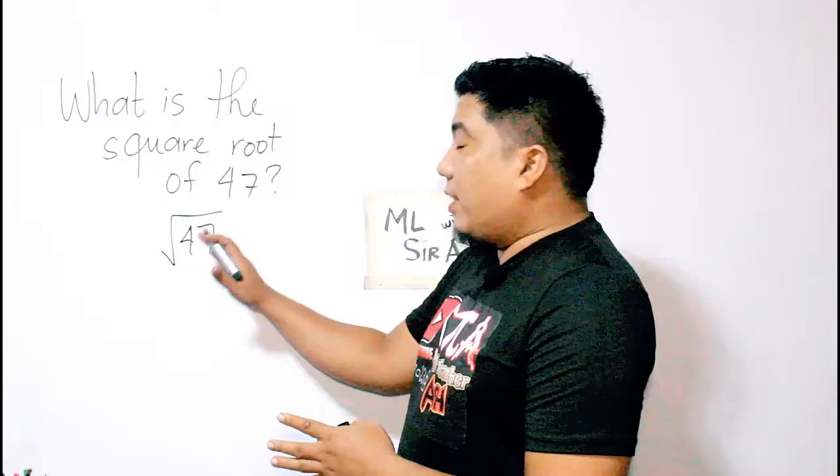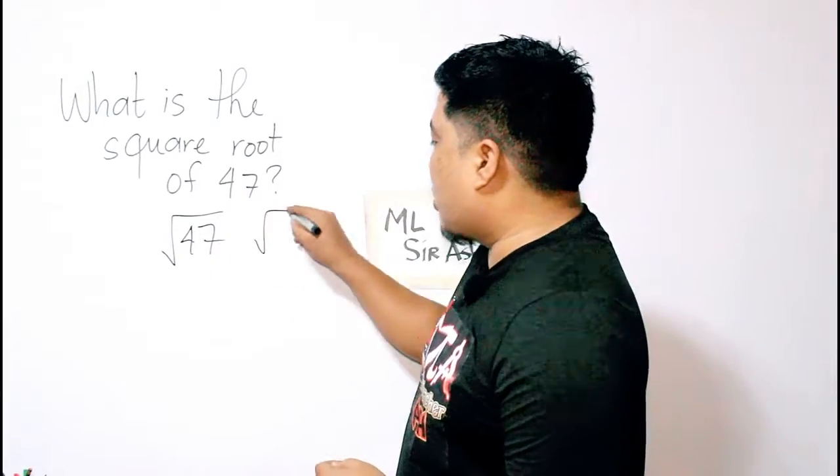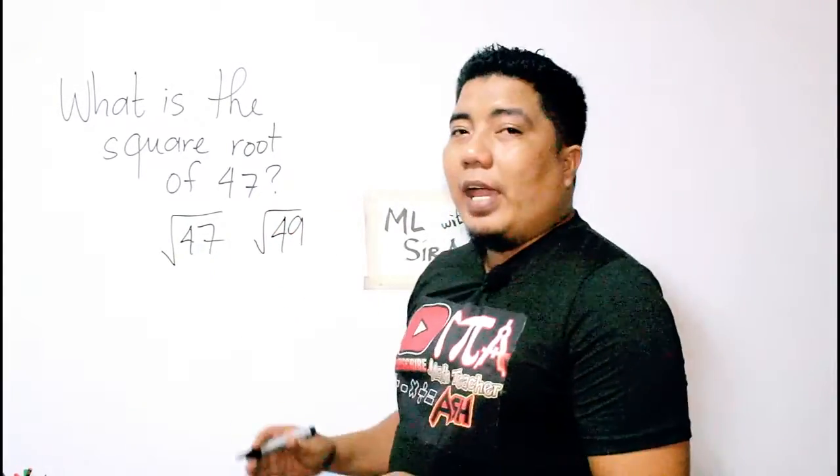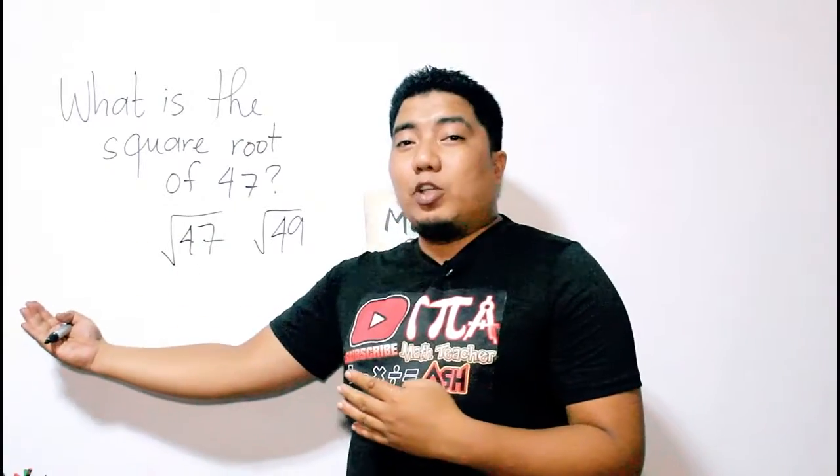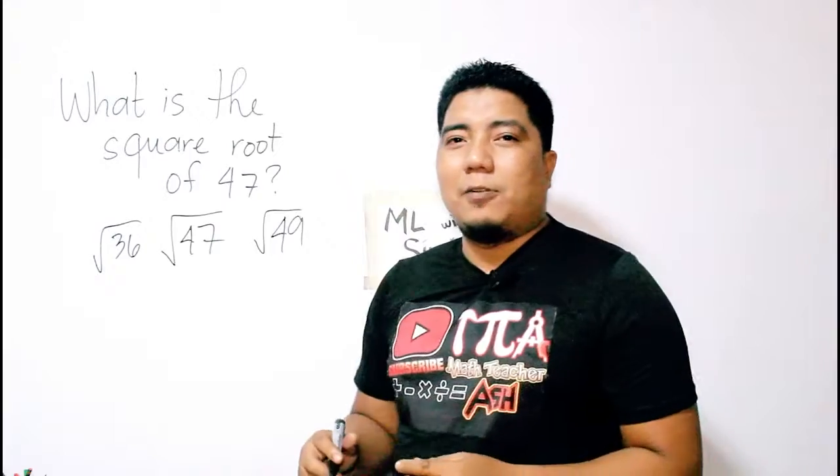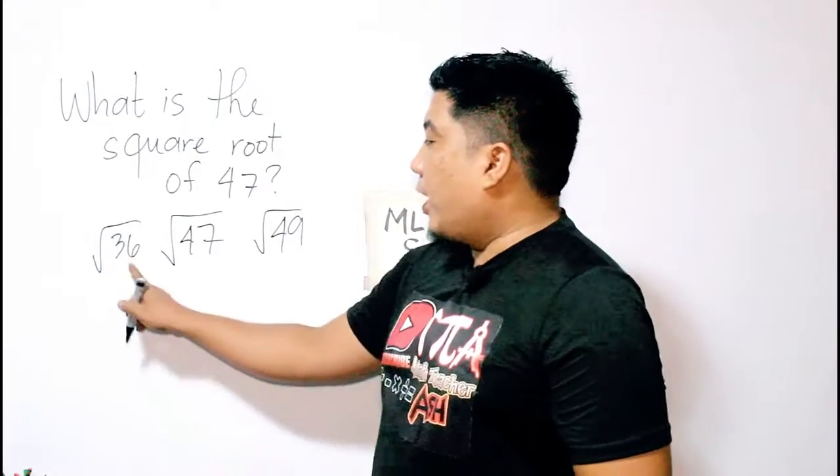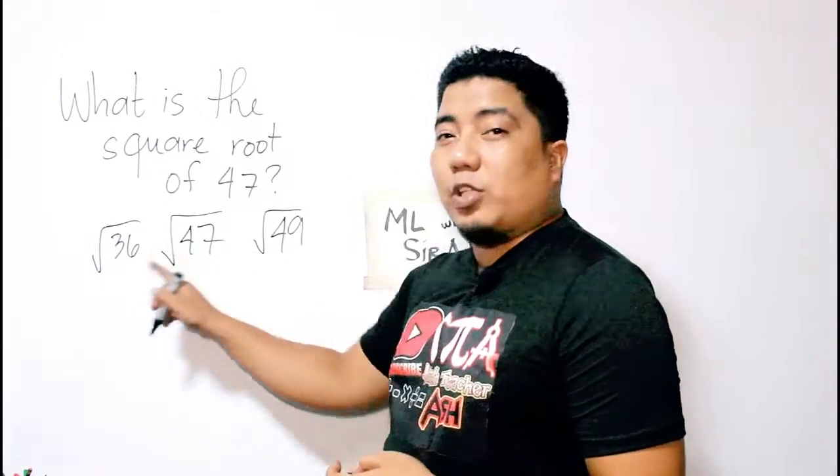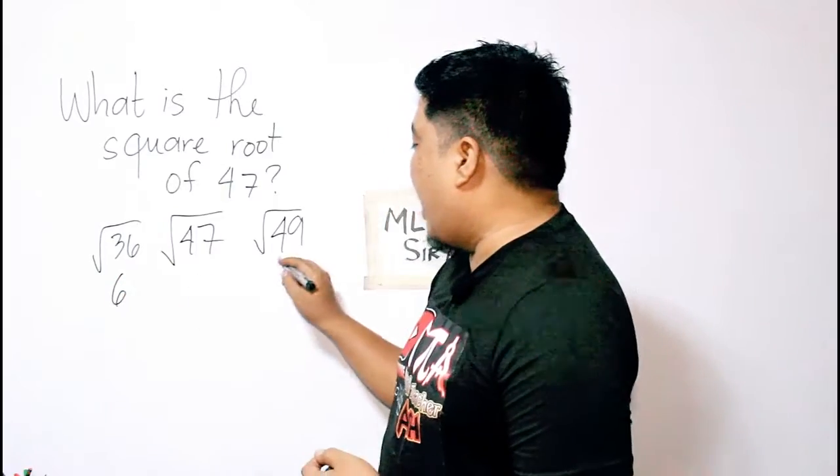That is square root of 49, and you will also consider the previous perfect square, and that is square root of 36. Now what you will do is you get the square root of the perfect squares, and that is 6 and 7.